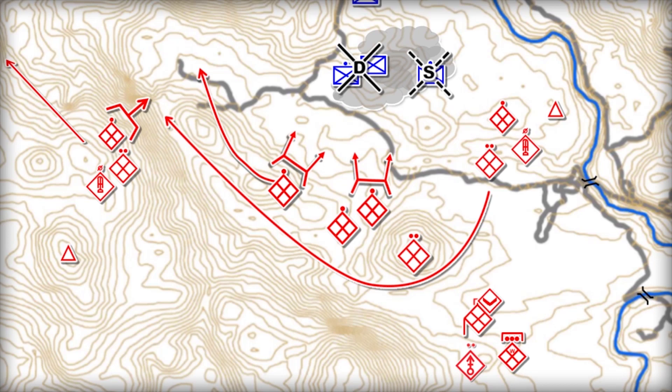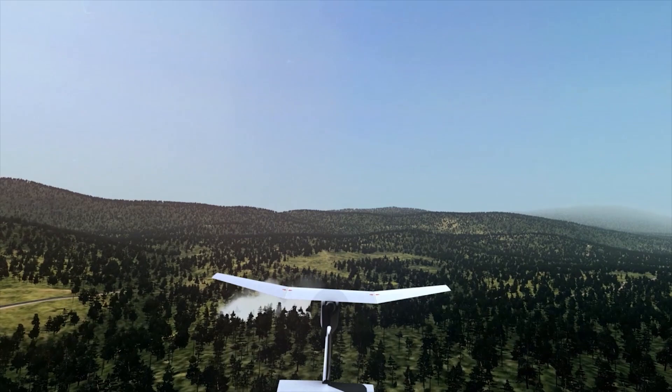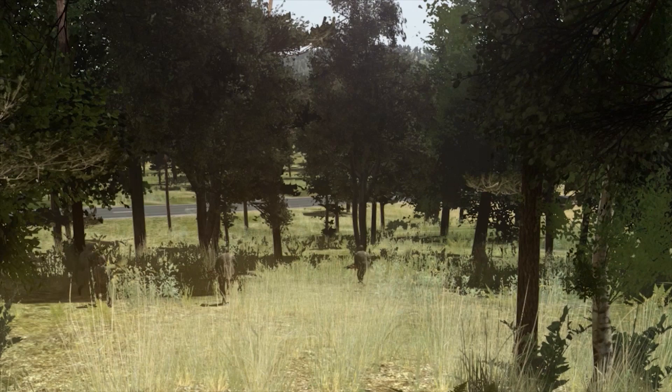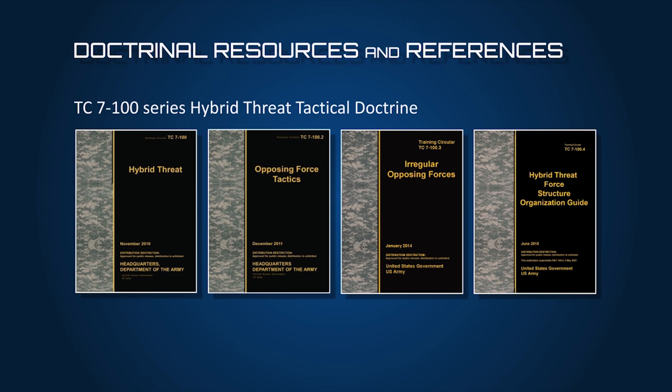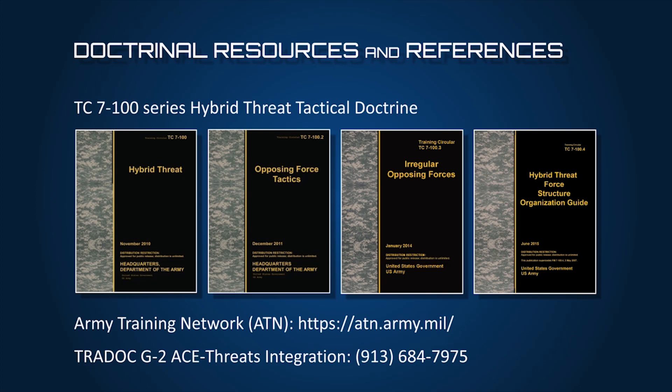Reserve, assist 2nd platoon with transporting casualties. You are now familiar with the functional organization and subtask execution for the OPFOR task actions on contact. The subtask actions apply to both the regular and irregular elements of the hybrid threat. The OPFOR task outline and TC-7100 series references are available on the Army Training Network web portal. Questions may be directed to the TRADOC G2 ACE Threats Integration Directorate at Fort Leavenworth, Kansas — the Army's responsible official for hybrid threat tactical doctrine. Good luck in your training. Be aggressive and adapt quickly.